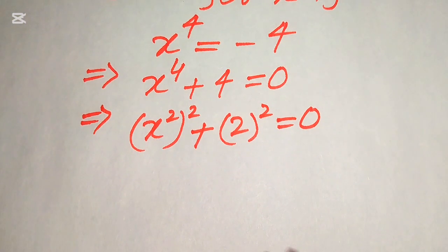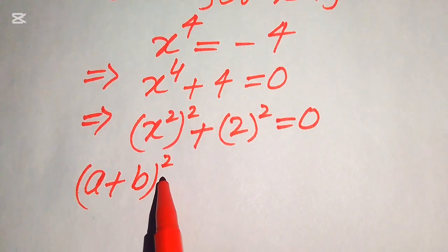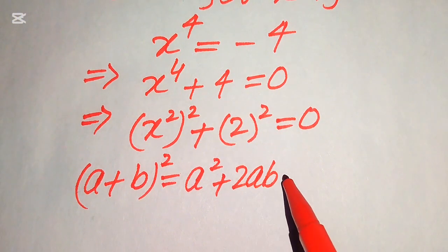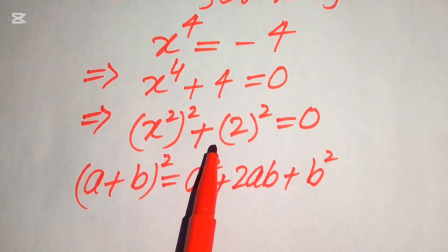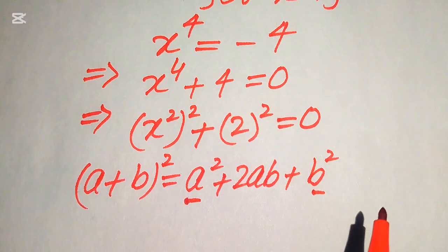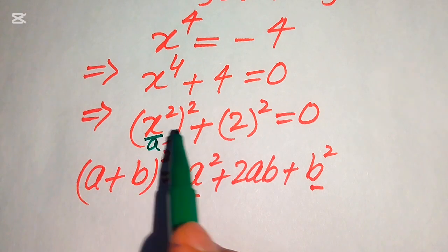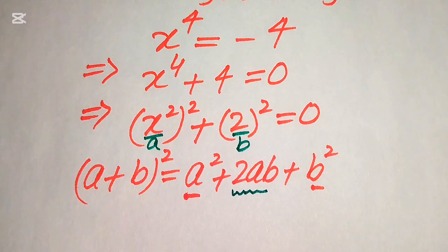For completing the square, we use the algebraic identity: (a + b)² equals a² plus 2ab plus b². We have two terms: a² and b². We call a equals x squared and b equals 2. We have only these two terms and we need the middle term 2ab.